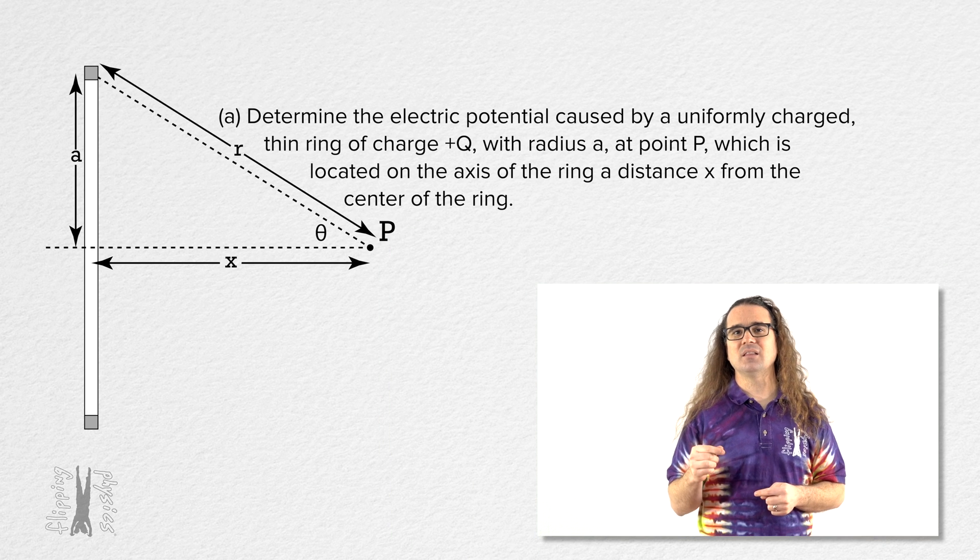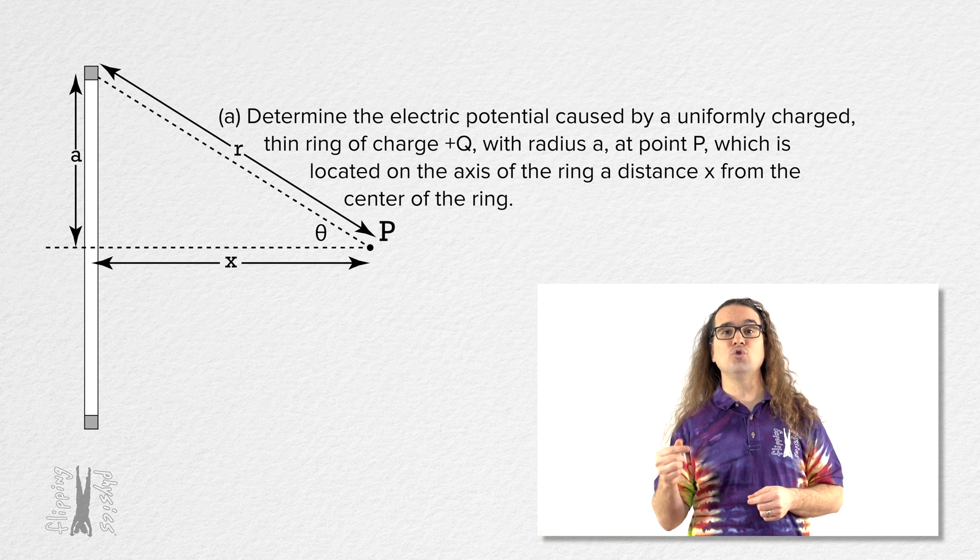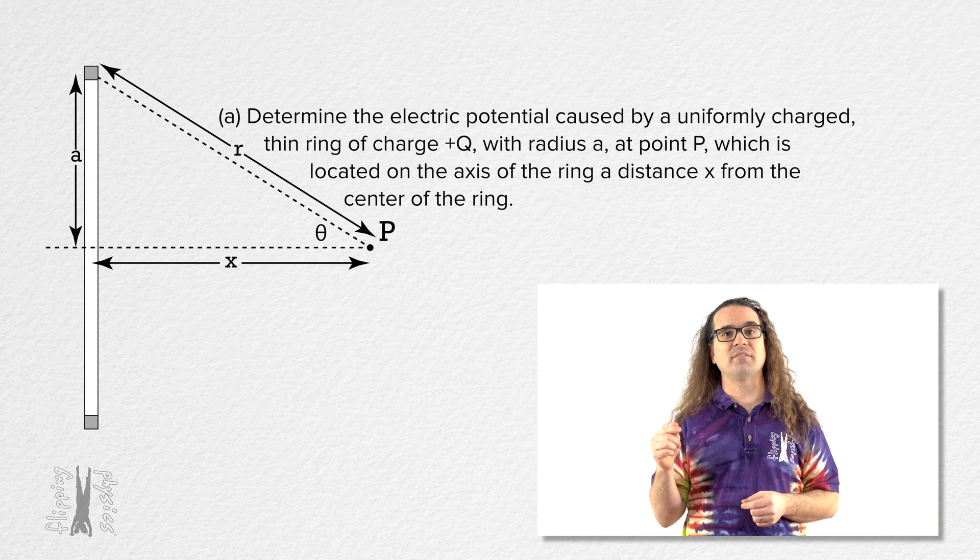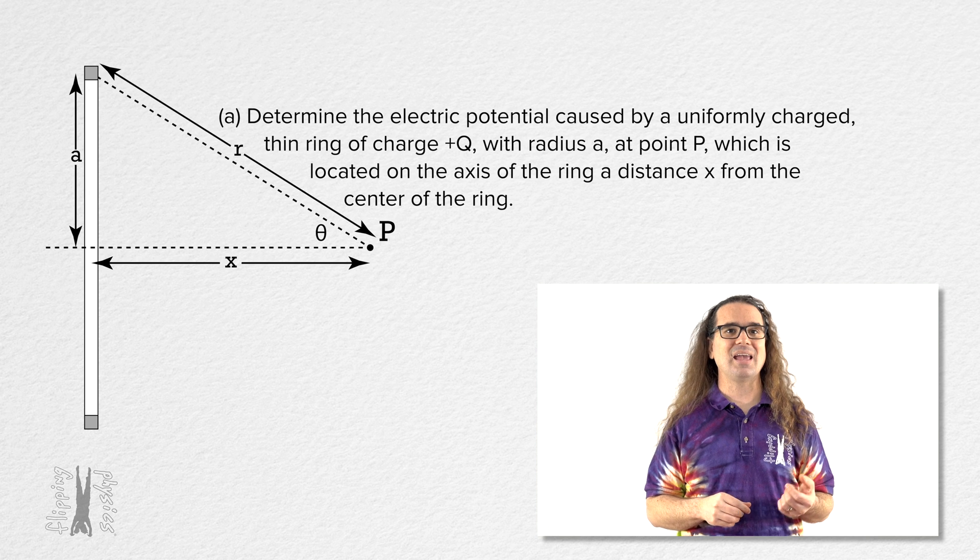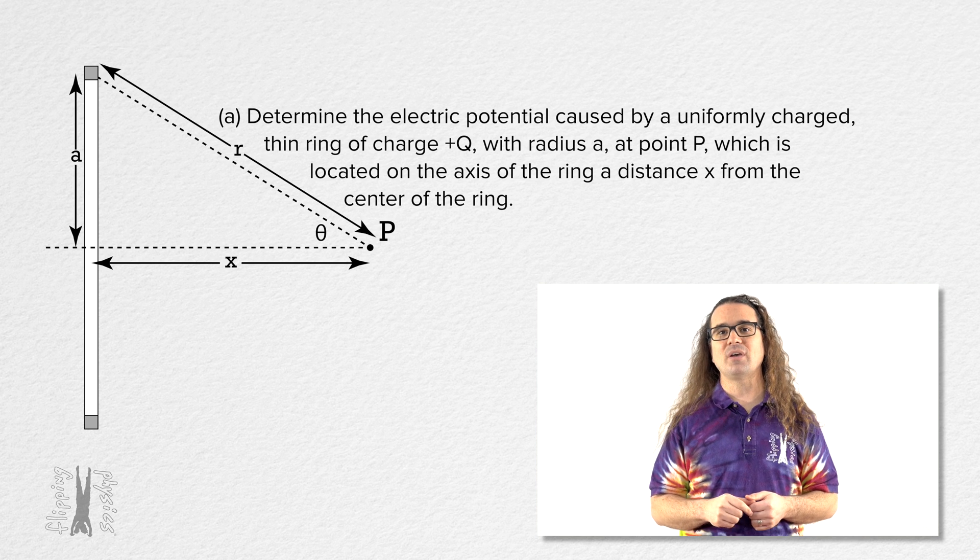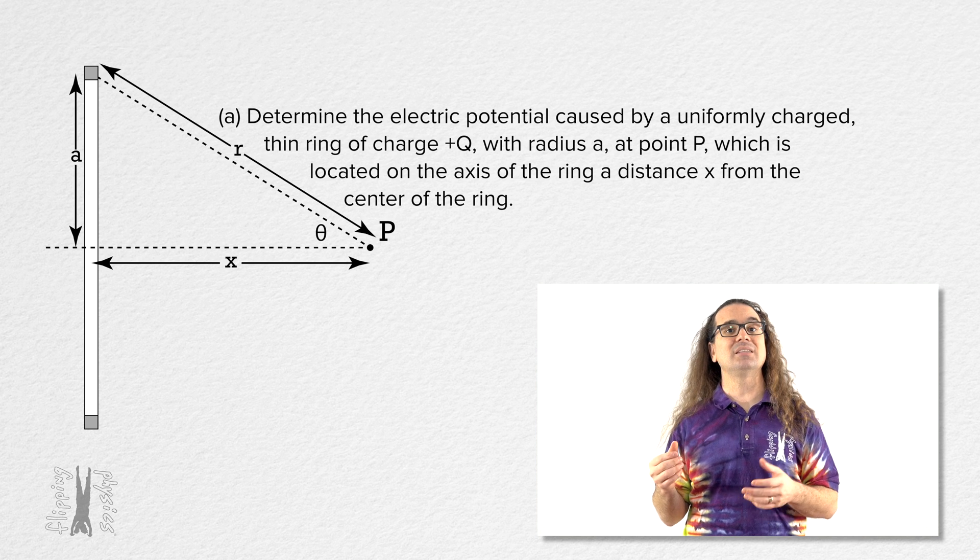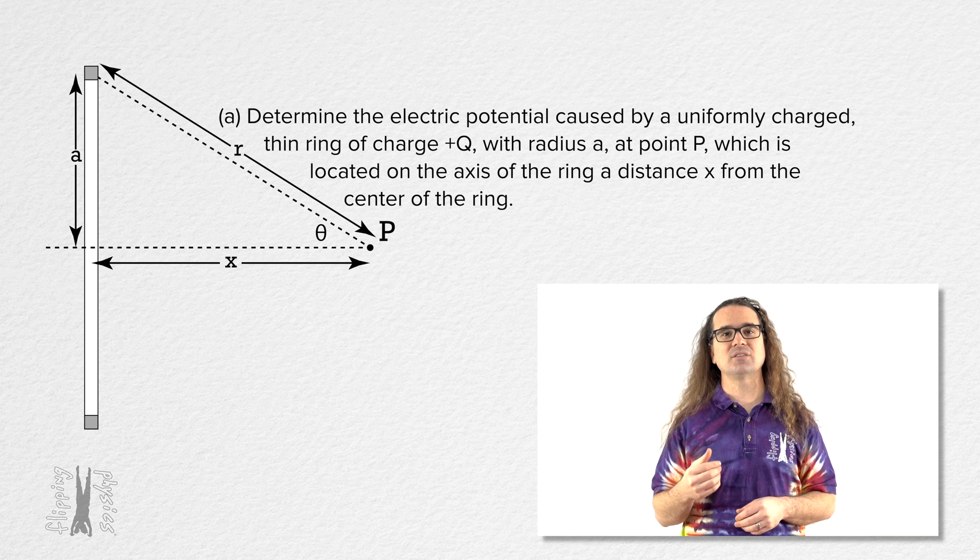Let's determine the electric potential caused by a uniformly charged thin ring of charge positive q with radius lowercase a at point p which is located on the axis of the ring a distance lowercase x from the center of the ring.